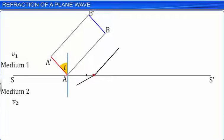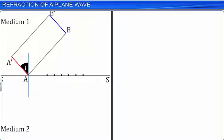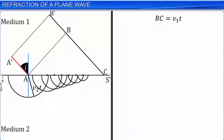As the wavefront travels from medium 1 to medium 2, different points of the wavefront are incident on the interface SS' at different instances of time. If point B is incident on the interface at C after T seconds, then BC equals V1T. Since the speed of light in medium 2 is V2, during the same period the secondary wavelet generated at point A at time T equals 0 will have formed a hemisphere of radius V2T. Secondary wavelets from different points on the interface form hemispheres of different radii in medium 2. If we construct a plane CD tangential to all these hemispherical secondary wavelets, it would represent the refracted wavefront after T seconds.